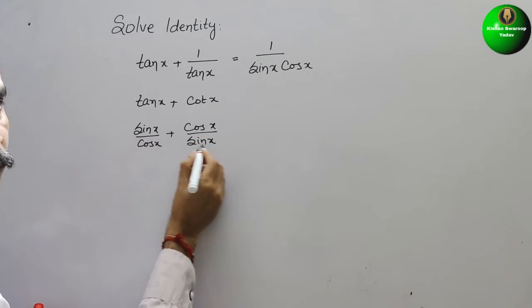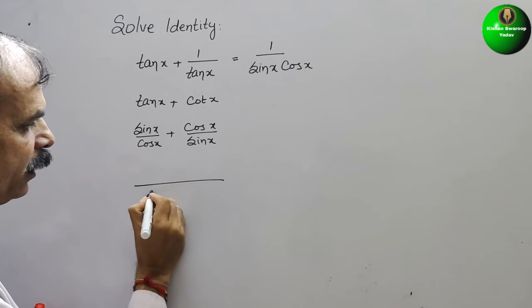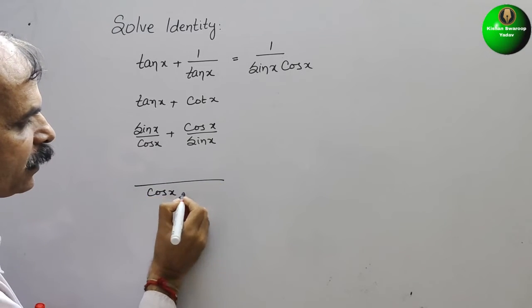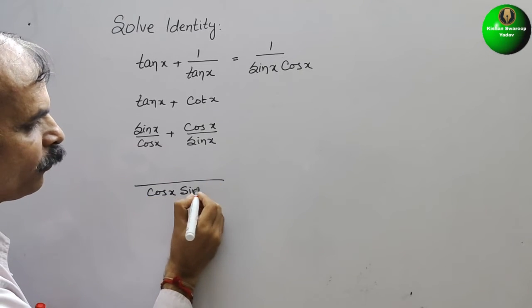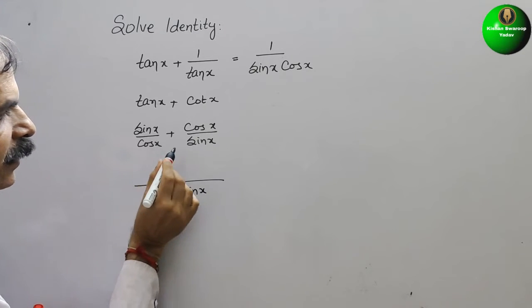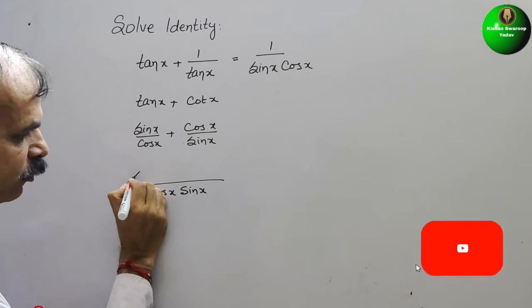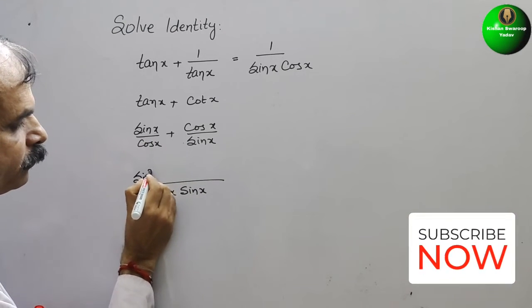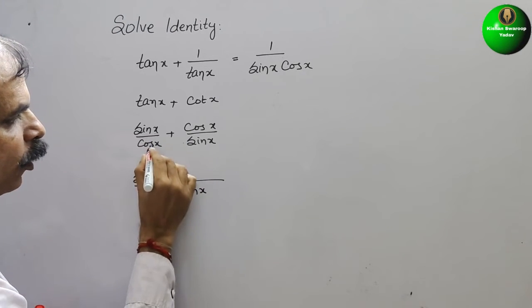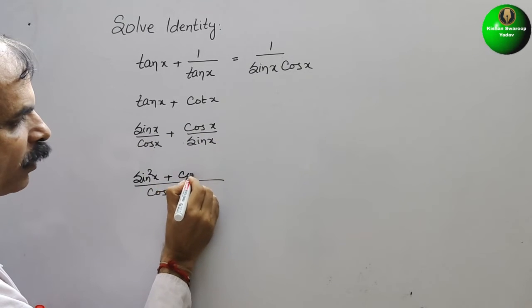Now, take the LCM of this. So it will be cos x sin x. And here, just cross multiply them. Sin x into sin x is sin square x plus cos into cos is cos square x.